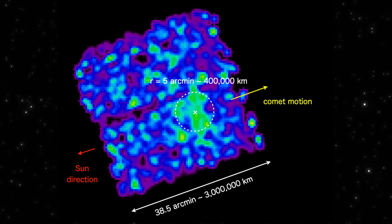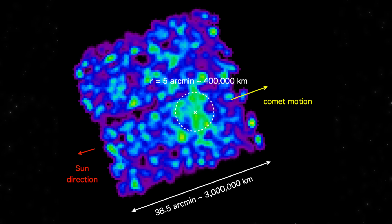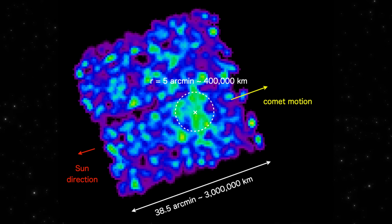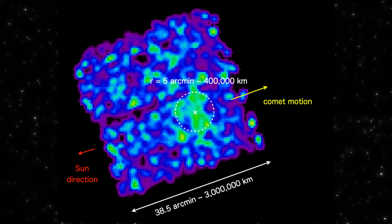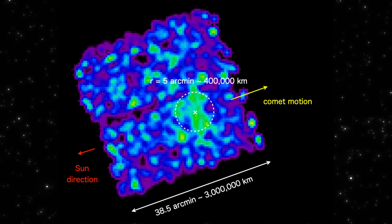So right out of the gate, this first X-ray snapshot is telling us something loud and clear. Three I-Atlas isn't behaving like a comet. It's acting like a high-energy source. And no one knows why.